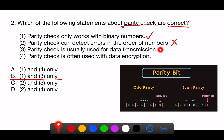3. Parity check is usually used for data transmission. Correct. Parity checks are commonly used in communication systems to detect errors during data transmission. They provide a simple way to check for single-bit errors in transmitted data blocks.